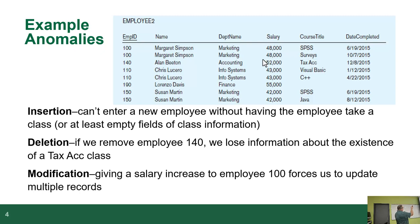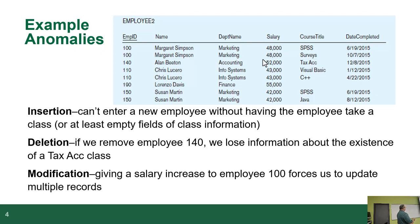We've got a table here — it's a really shitty table, but it's a relation. It's not normalized. If we try to add an employee, we can't hire a new employee without them taking a class. If the primary key is employee and course title, the only way we can identify any given row is a combination of the employee ID and the course title. We can find Margaret Simpson twice by employee ID 100 — she took SPSS and surveys. An insertion anomaly means I cannot add one piece of information without adding extra stuff that really you shouldn't have to add.